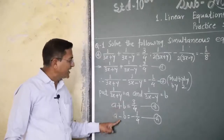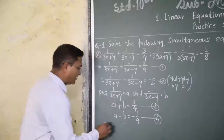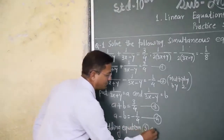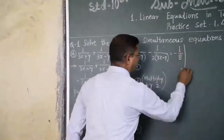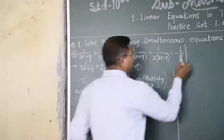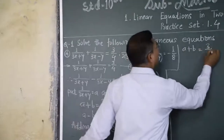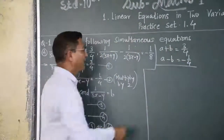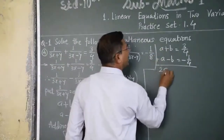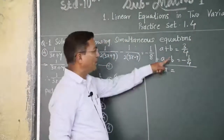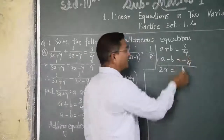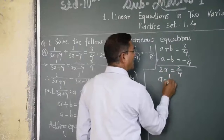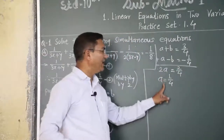Observe equations three and four: coefficients of a are the same sign, and b has opposite signs, so we add them. Adding equation three and four: a plus b equals 3 upon 4, and a minus b equals minus 1 upon 4. Adding gives 2a equals 3 upon 4 minus 1 upon 4, which is 2 upon 4. Therefore a equals 1 upon 4.